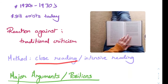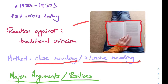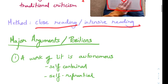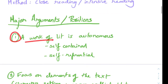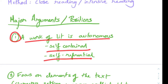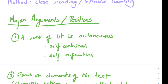The method used here is close reading, or intensive reading of the text. We just have the text; we don't care about anything to do with the author. The major arguments or positions for new criticism: first, a work of literature is autonomous — it is self-contained and self-referential. So everything you need to know is in the book itself.